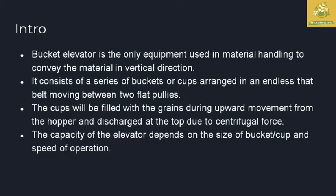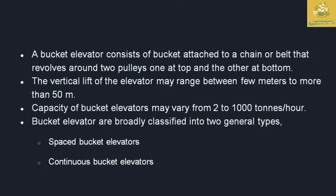The bucket elevator moves a belt with two flat pulleys, and a series of buckets are arranged on the belt. The grains move upward and discharge at the top due to centrifugal force. The grains from the bucket are pulled down at the discharge end. The capacity of the elevator majorly depends upon the size of the bucket or cup and also the speed of operation. The bucket elevator is attached to a chain or belt with two pulleys, one at the top and one at the bottom.